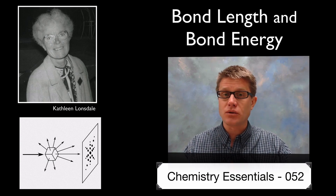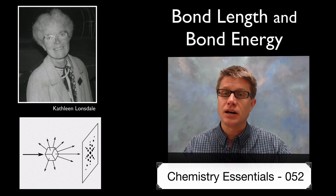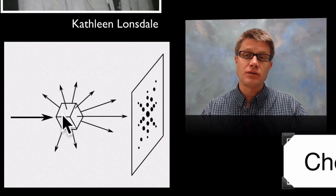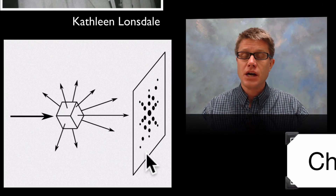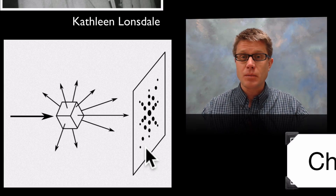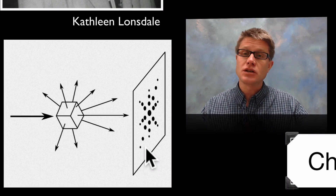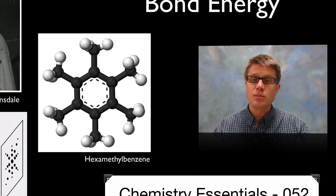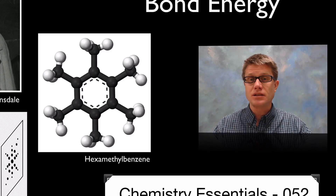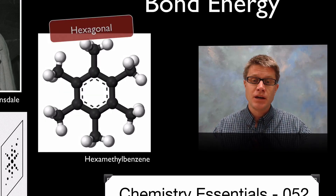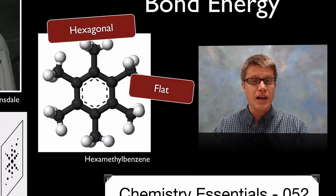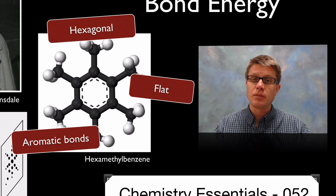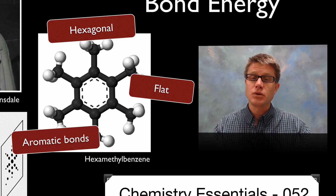Some of the first bond lengths ever measured were measured by scientist Kathleen Lonsdale, who was an X-ray crystallographer. She would put a solid crystal in front of X-rays, measure the diffraction. It told her a lot about the structure of that molecule and she could even measure the distance between atoms. That allowed her to unlock the structure of hexamethylbenzene, that famous benzene ring. She was able to determine that it was a hexagon, that it was flat. She even measured the aromatic bonds — the single-double, single-double, single-double bonds between the carbons.